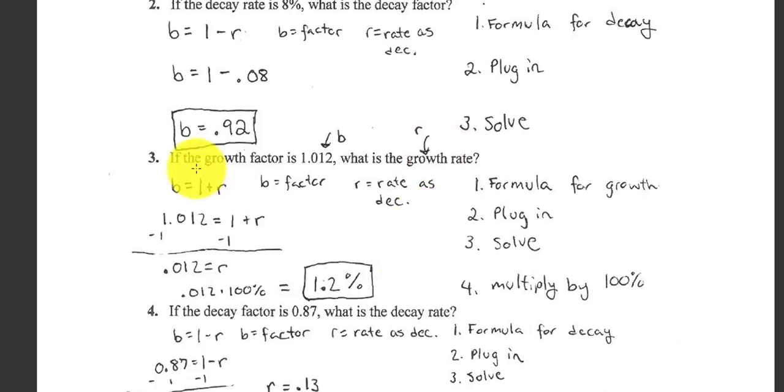Number 3. Now they give us the growth factor and they want the growth rate. So we know we use B equals 1 plus R. Replace the B with the 1.012 and solve for R. And you end up with 1.2%.